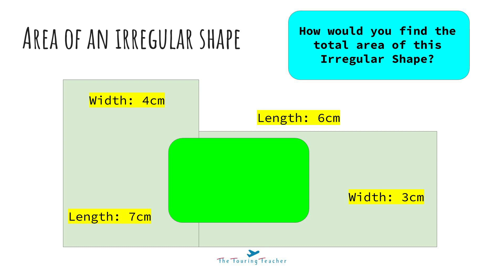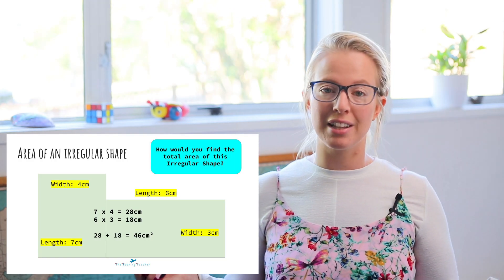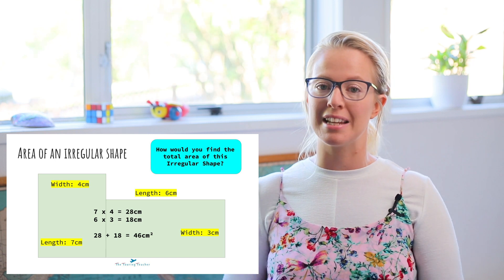So for this irregular shape, we've got two rectangles put together — we've got width and length for one, and width and length for the other one. So what I'm going to do is divide it into the two different rectangles. The one on the left: length times width is 7 times 4, and that equals 28. Now the other rectangle has a length of 6 and a width of 3, so 6 times 3 equals 18. Now I've got the area of the two different rectangles, but because I'm trying to find the area of the whole shape, I need to add those two together: 28 plus 18. The total area of this irregular shape is 46 centimetres squared.